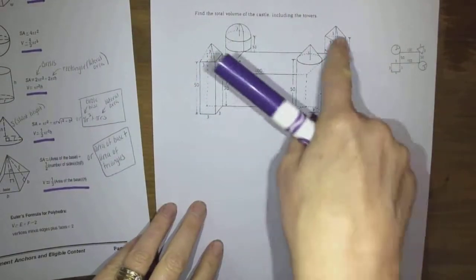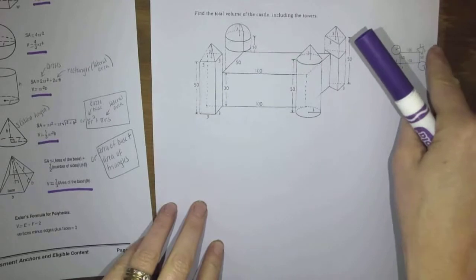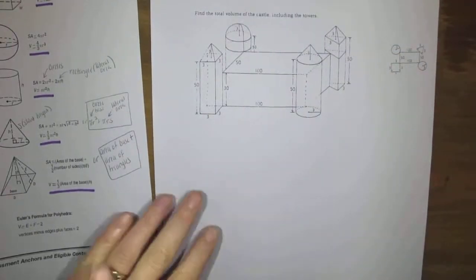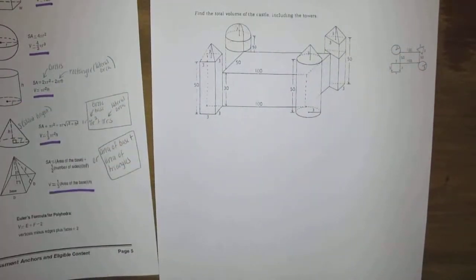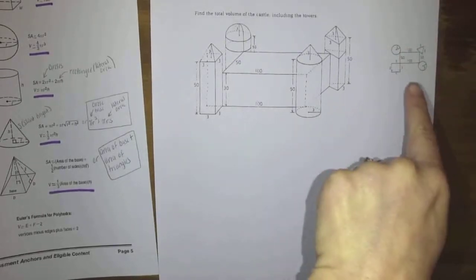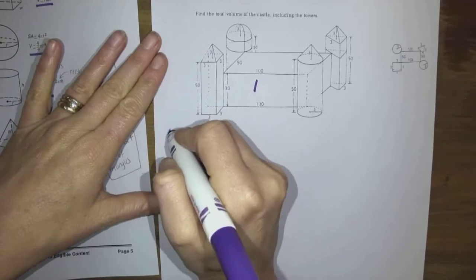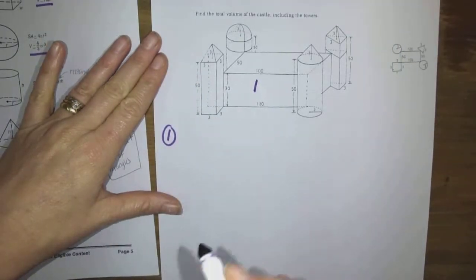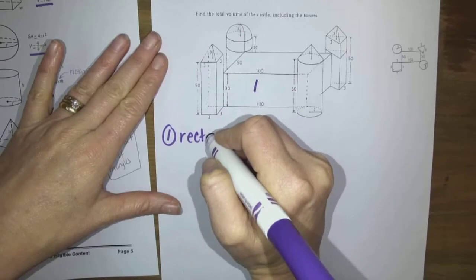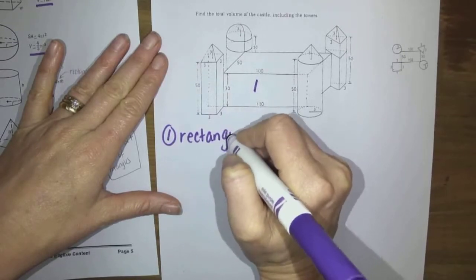This is the entire castle. If you flipped it over, this would be its base just on the bottom. So if you have trouble figuring out what some of the dimensions are, this picture off to the side may help you. Number one that is right in the middle, that is a rectangular prism. I would like you to find that first.